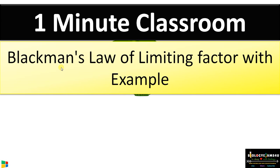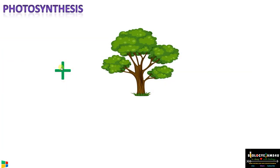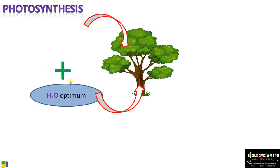Hi friends, welcome to One Minute Classroom from biologyexams4u.com. Today's topic is Blackman's Law of Limiting Factor with an example. As we all know, photosynthesis is a process that is controlled by many factors like water availability and carbon dioxide.